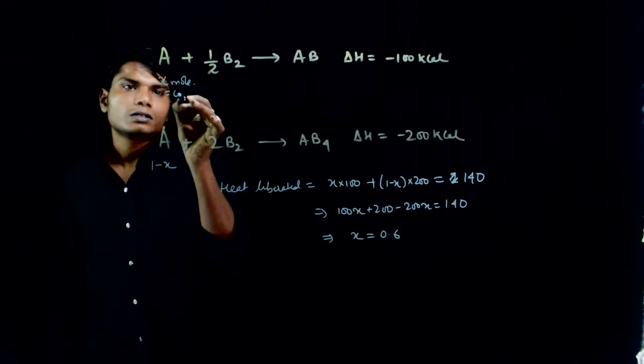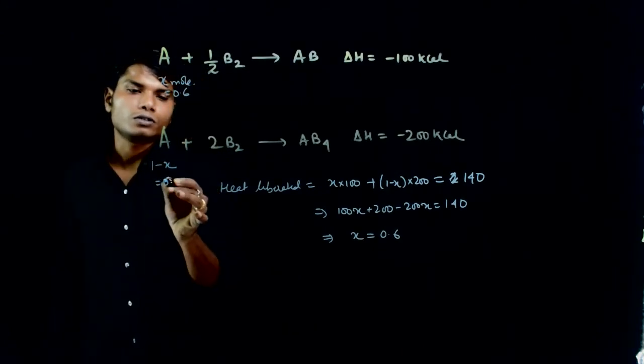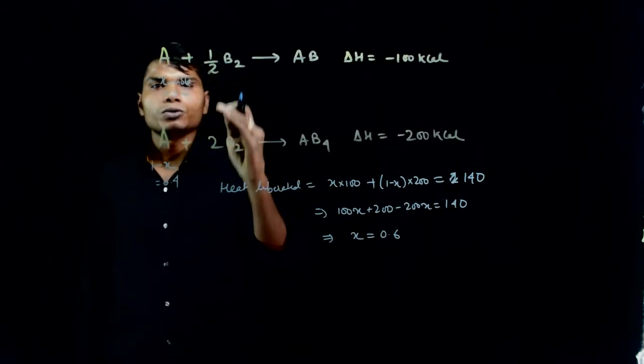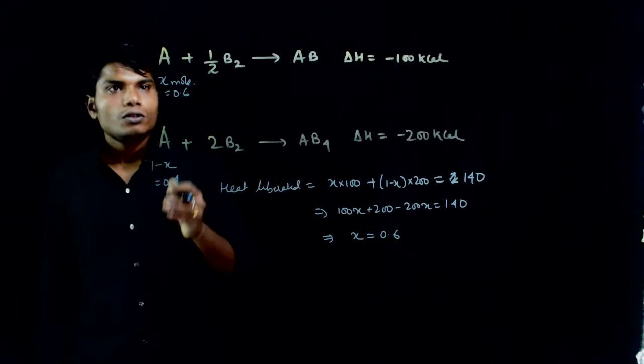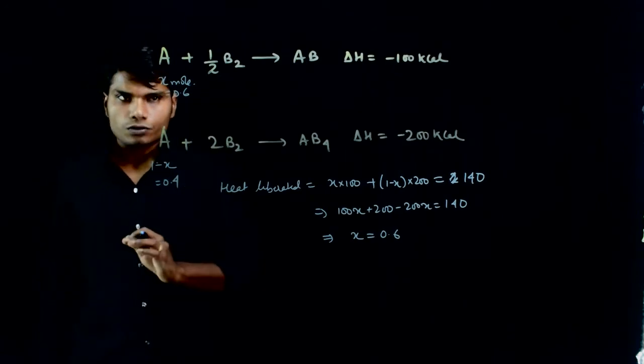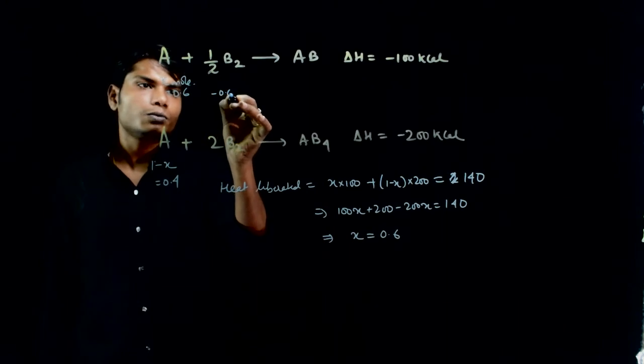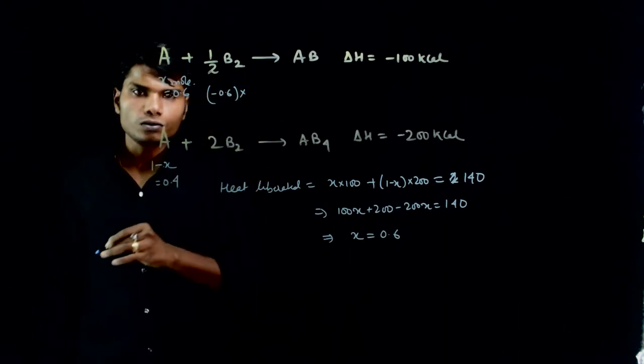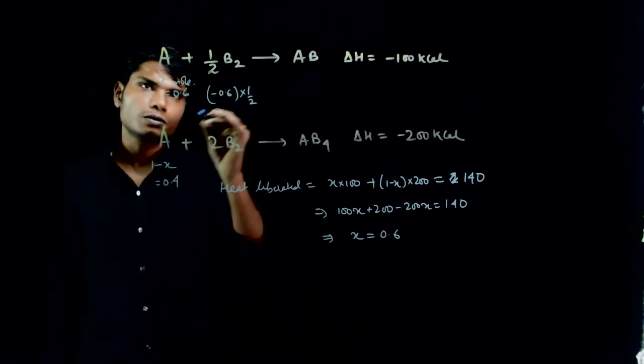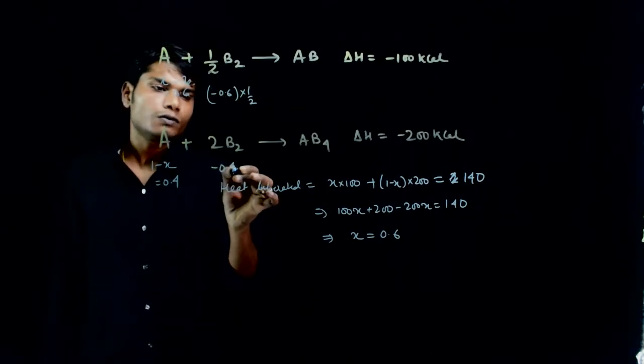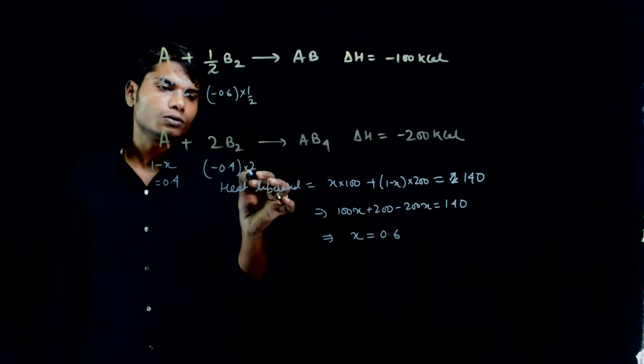So x equals 0.6. So here it becomes 0.6 and here it becomes 0.4 mole. The question asks how much B2 was consumed. So here for B2, how much was consumed? Here for B2, minus 0.6 into half by 1. Here it's minus 0.4 into 2 by 1.